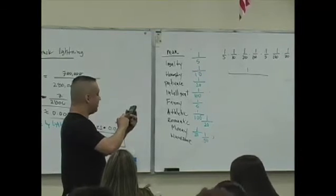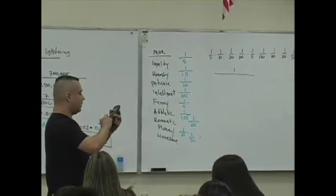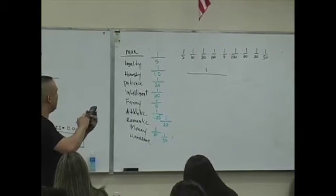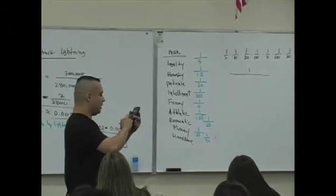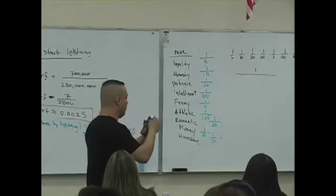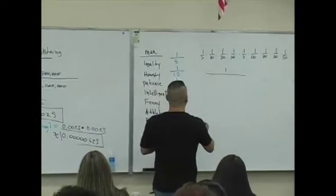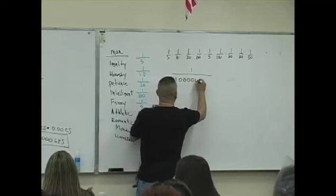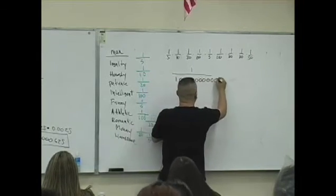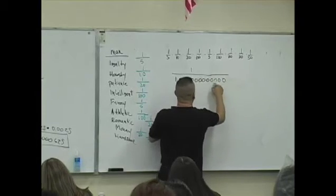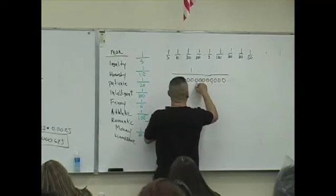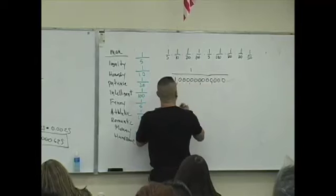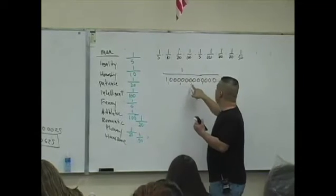Five times ten times twenty times a hundred times five times a hundred times twenty times twenty times fifty. I get one. I get one, followed by twelve zeros. One, two, three, four, five, six, seven, eight, nine, ten, eleven, twelve.